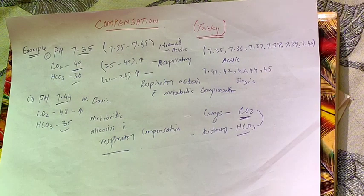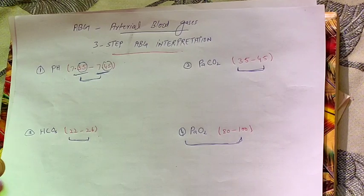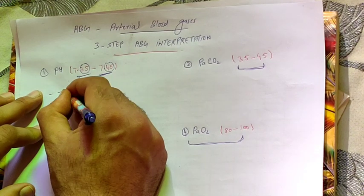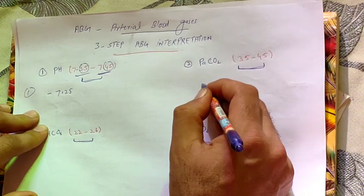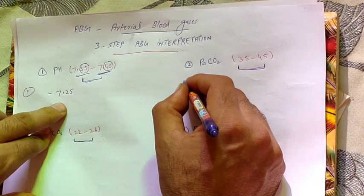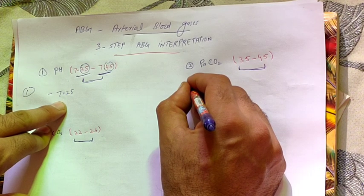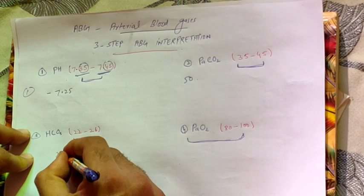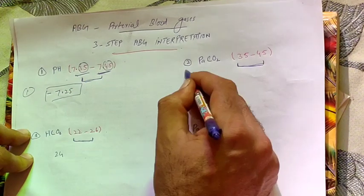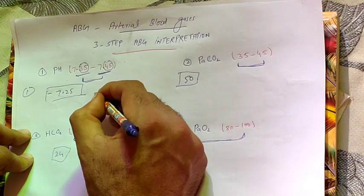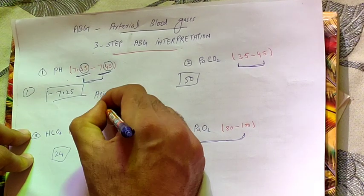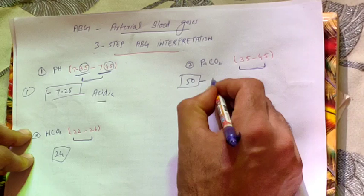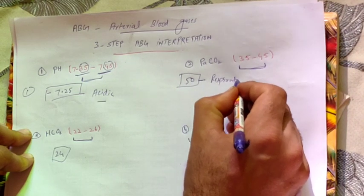Now I'll show you some examples to practice. Example one: pH 7.25, pCO2 50, HCO3 24. First, you decide it is acidic. Next, check pCO2 — it is 50, which is more than the normal range of 35 to 45, so pCO2 is elevated. Therefore this is respiratory acidosis.